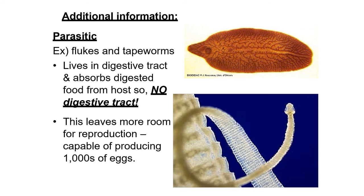These animals — Planaria, flukes, and Taenia solium — especially flukes and Taenia solium — are parasitic. Flukes and tapeworms live in the digestive tract and absorb digested food from the host. No digestive tract is present in Taenia solium.